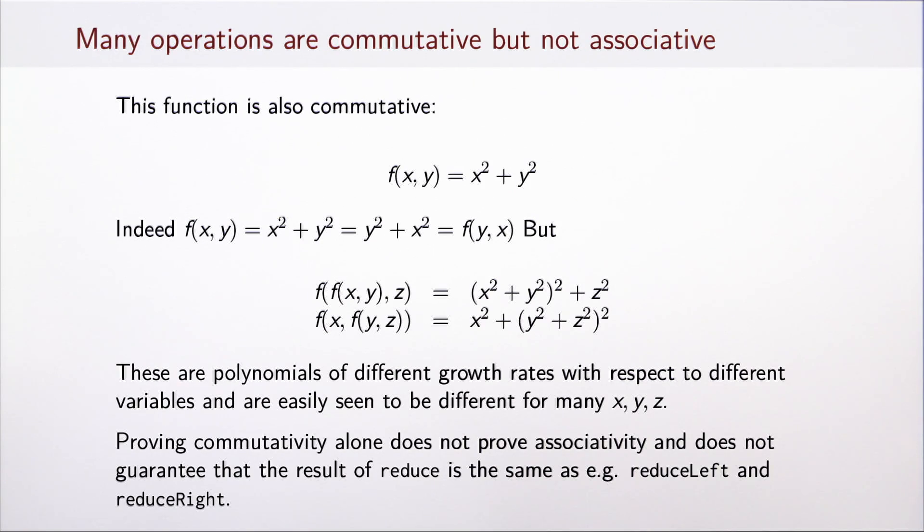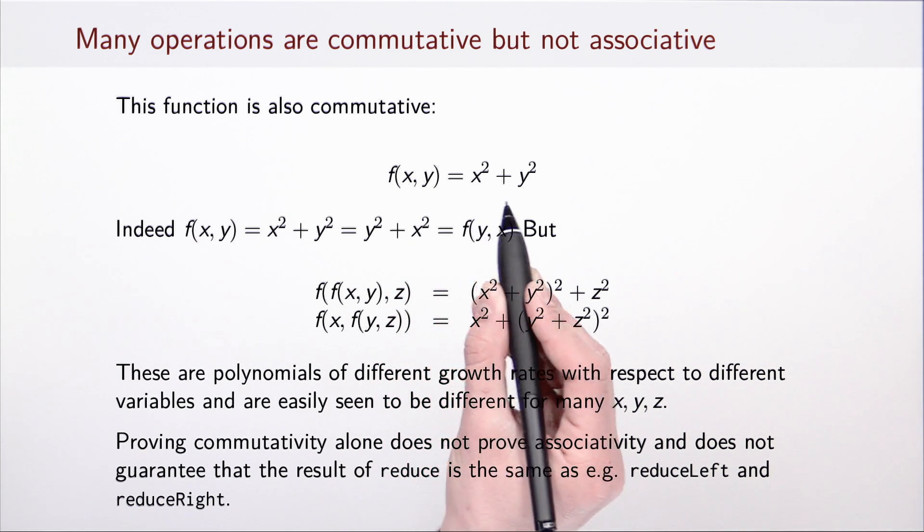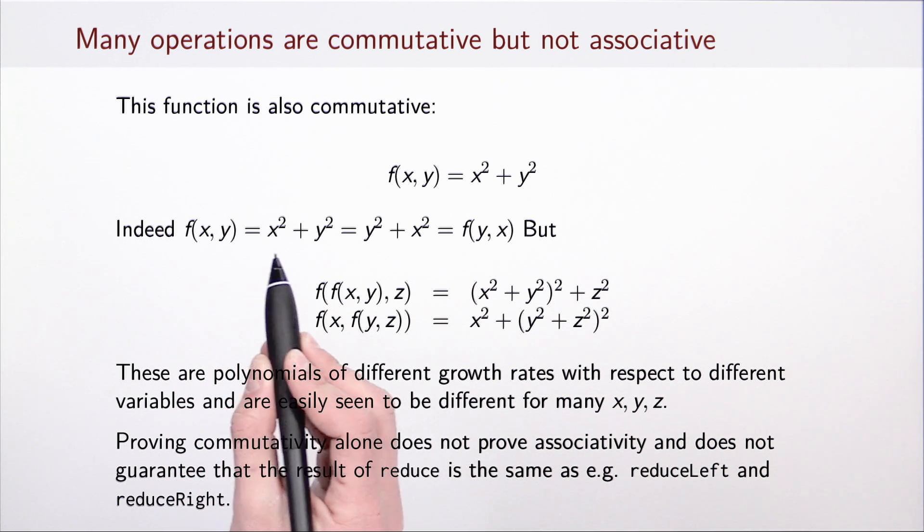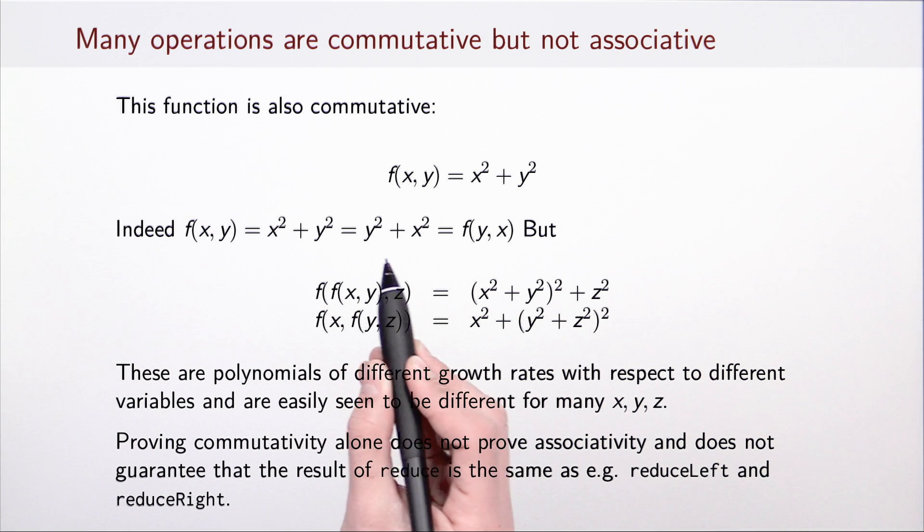Now as a warning, there are operations that are commutative but not associative. Here's one example. Function f defined as x squared plus y squared. It is easy to see that x and y play symmetric role, so f(x,y) is x squared plus y squared whereas f(y,x) is y squared plus x squared. On the other hand, if we compute the two sides of the associativity law...